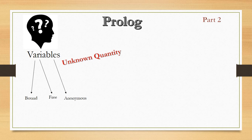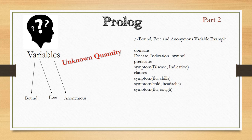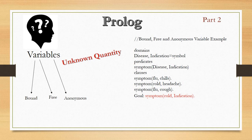I'll make it clear with an example about bound, free, and anonymous. In the domain I have written two variables — disease and indication — with symbol as the object type. In the predicate I have written symptom as a relation name, with disease and indication as arguments. In the clauses I have written three facts about flu and cold: for flu the indication is chills, for cold it is headache, and again for flu it is cough.